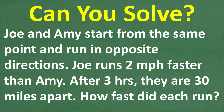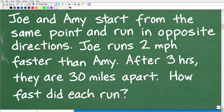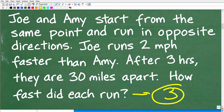Let's take one more quick look at the question. Joe and Amy start from the same point and run in opposite directions. Joe runs two miles per hour faster than Amy. After three hours, they are 30 miles apart. How fast did each person run? When you have a math word problem, always use the rule of three — read the problem at least three times before you start doing anything.